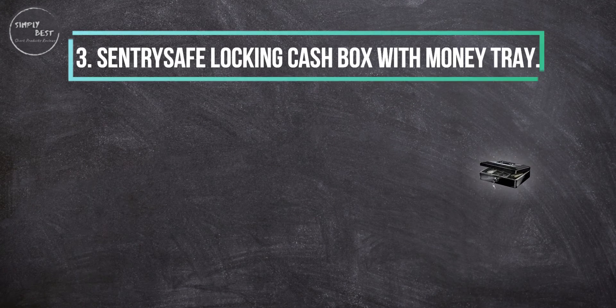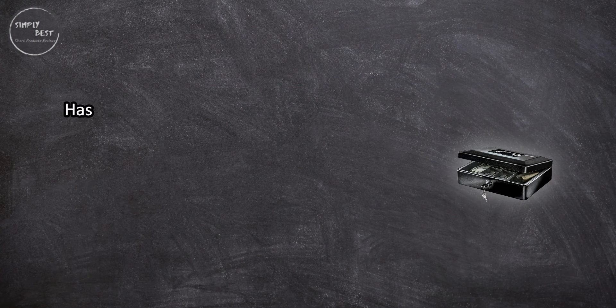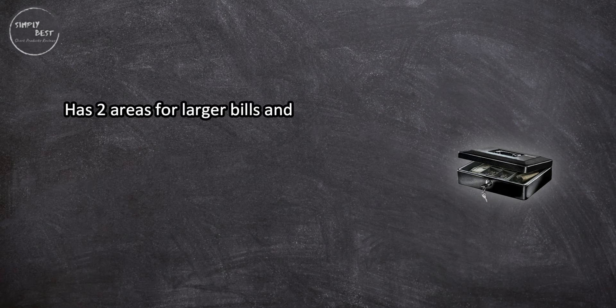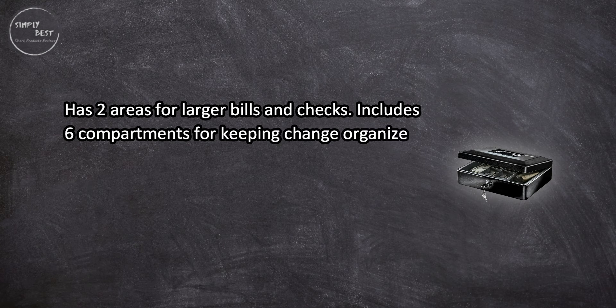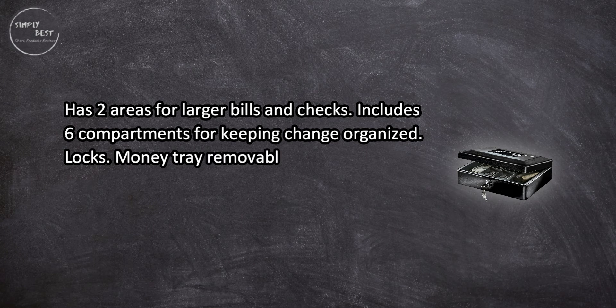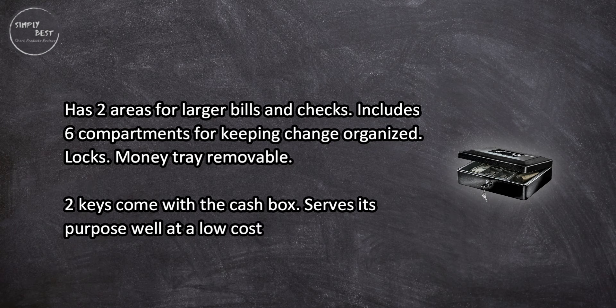At number three, Sentry Safe locking cash box with money tray has two areas for larger bills and checks, includes six compartments for keeping change organized, locks money tray removable, two keys come with the cash box. Serves its purpose well at a low cost, small handle on top for carrying.